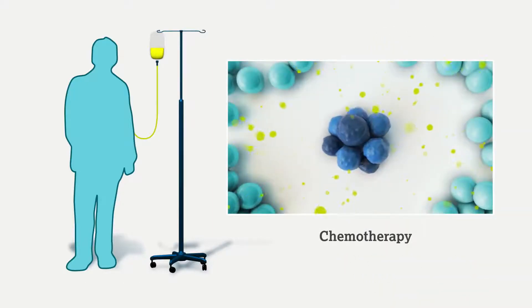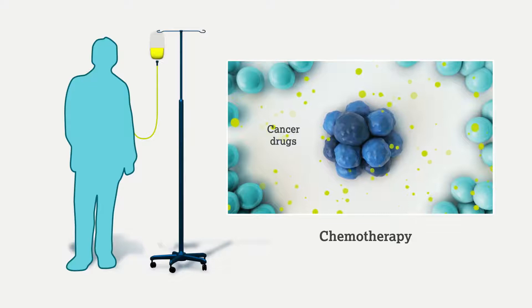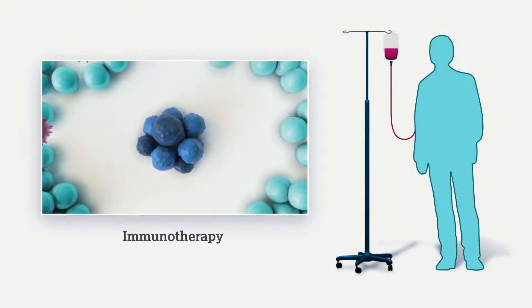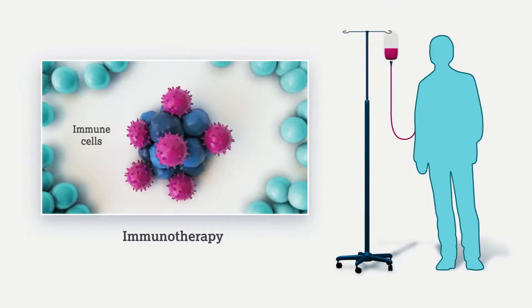Chemotherapy uses drugs that stop cancer cells from growing and making new cells. On the other hand, immunotherapy uses your body's own natural defenses to fight cancer cells. Let's find out how this works.